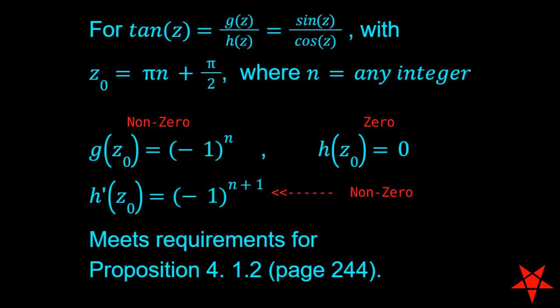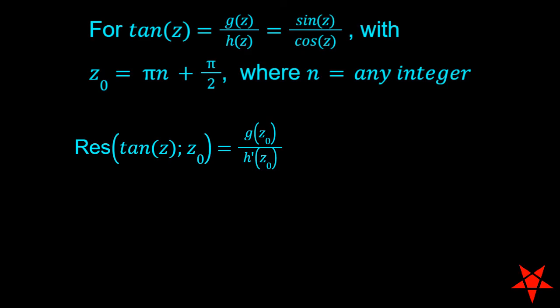With those requirements satisfied, tangent of z can be shown to have a simple first-order pole at each of its singularities, and the corresponding residue is equal to g(z₀) divided by h'(z₀).